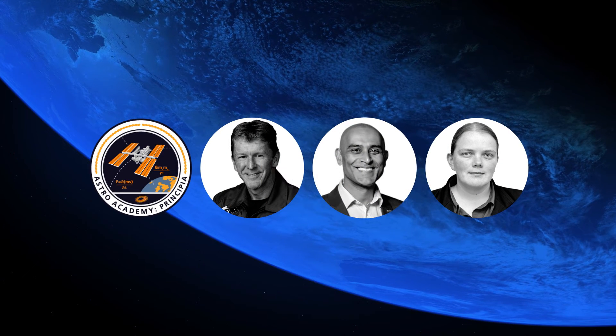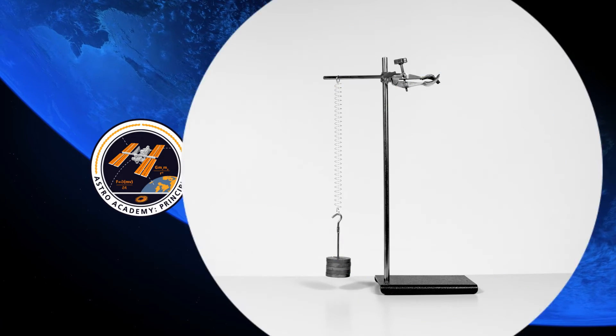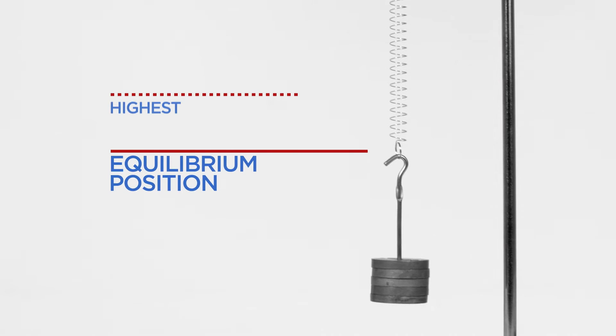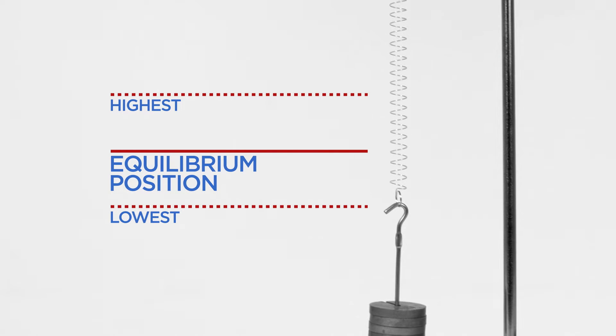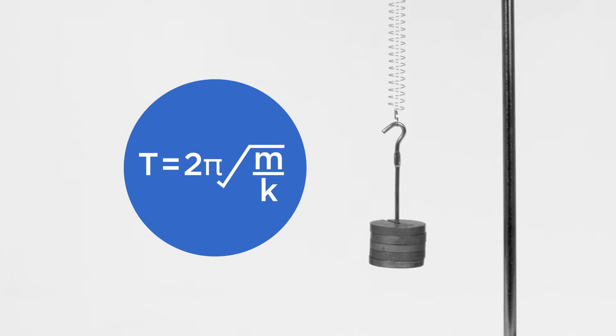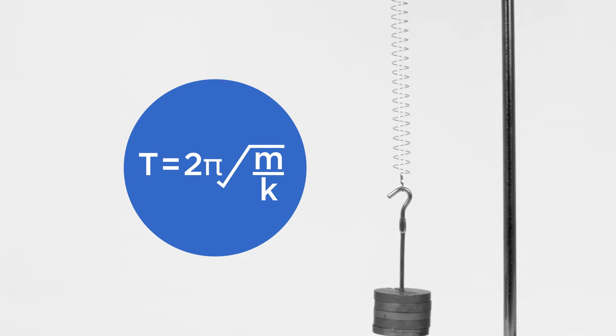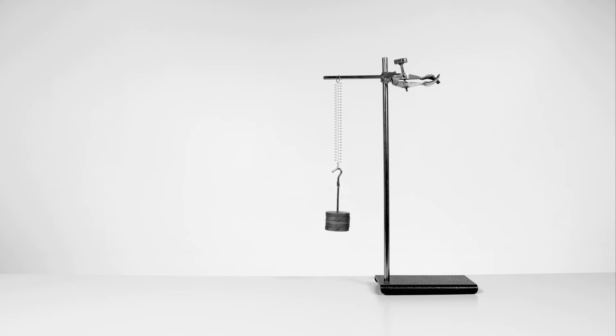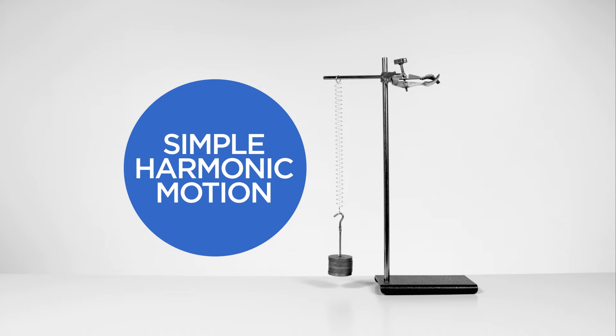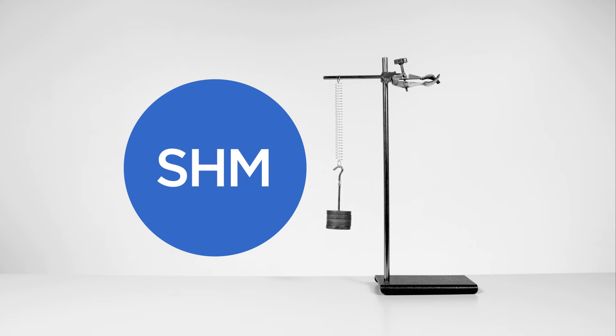There's one final demonstration that clearly shows another aspect of the behaviour of real molecules. Here we have a mass oscillating on the end of a spring. It's oscillating around its equilibrium position, with a period that depends on the size of the mass and the stiffness, or spring constant, of the spring. This is a classic example of simple harmonic motion, or SHM.